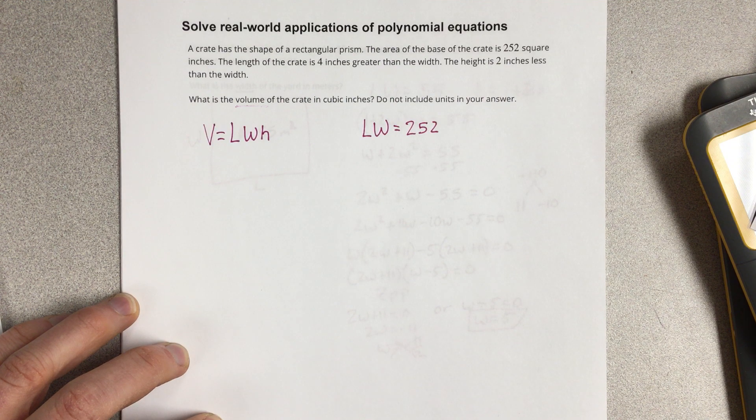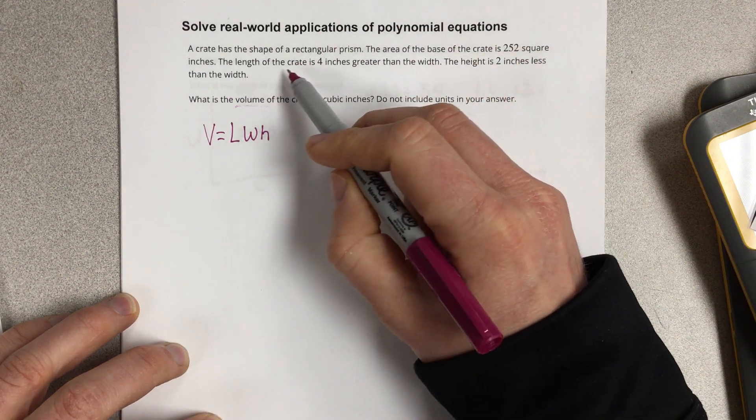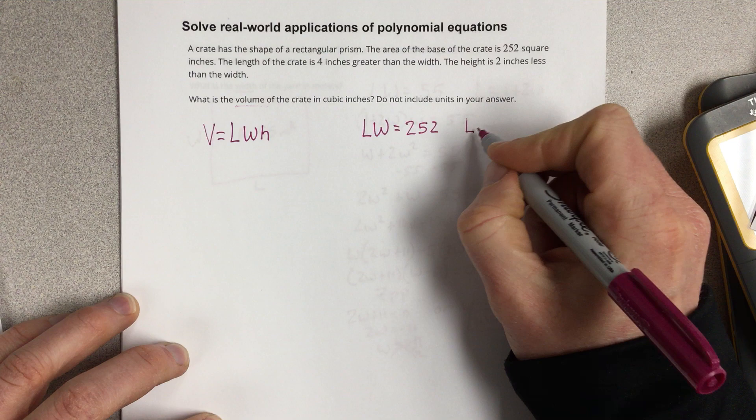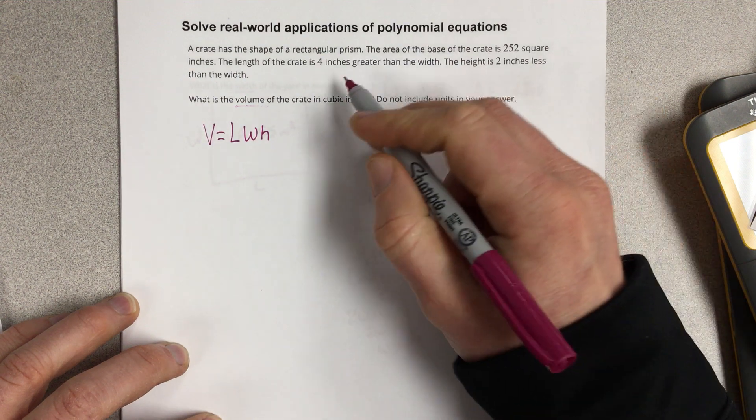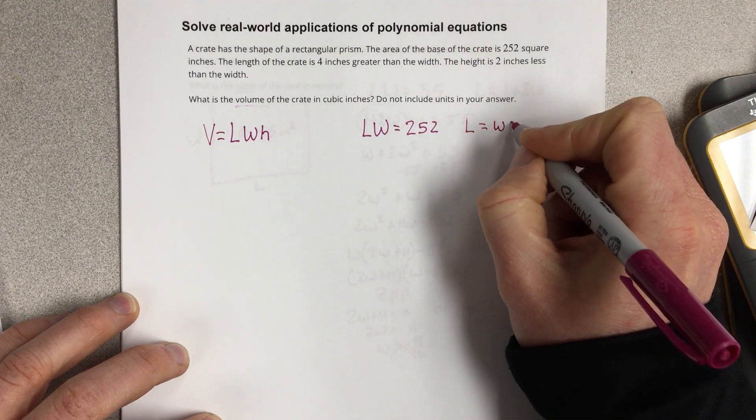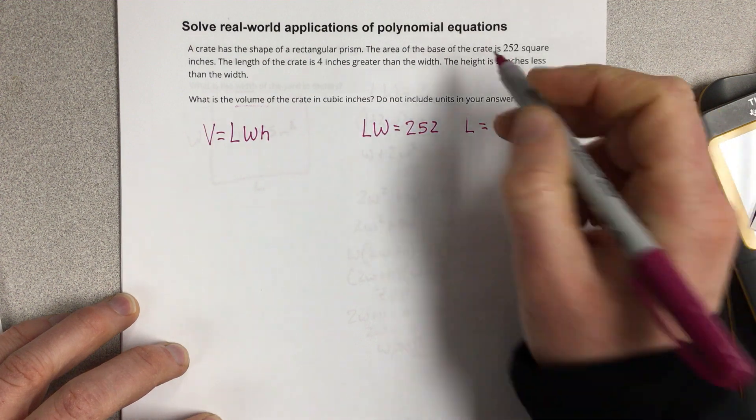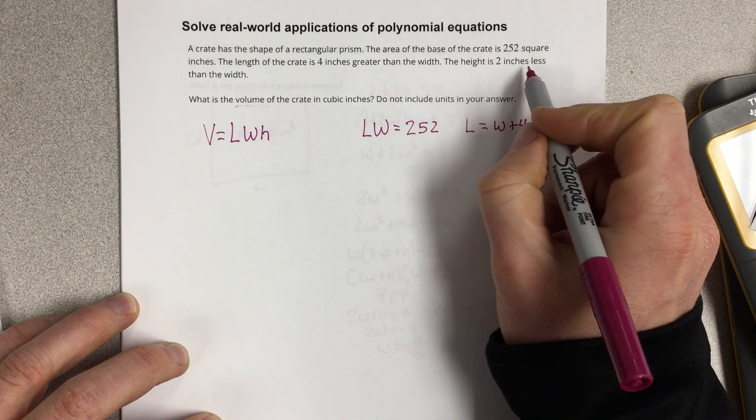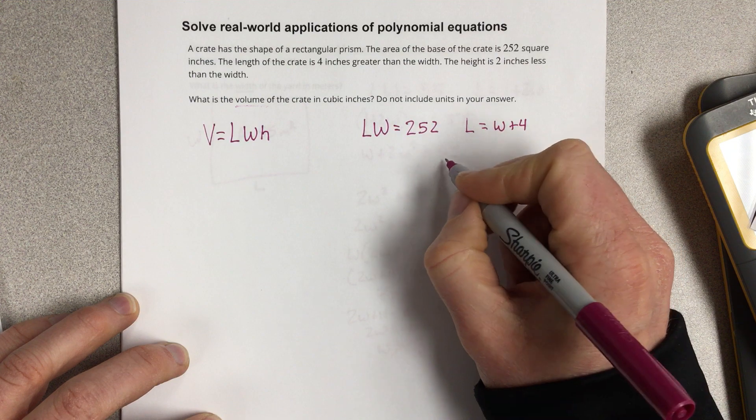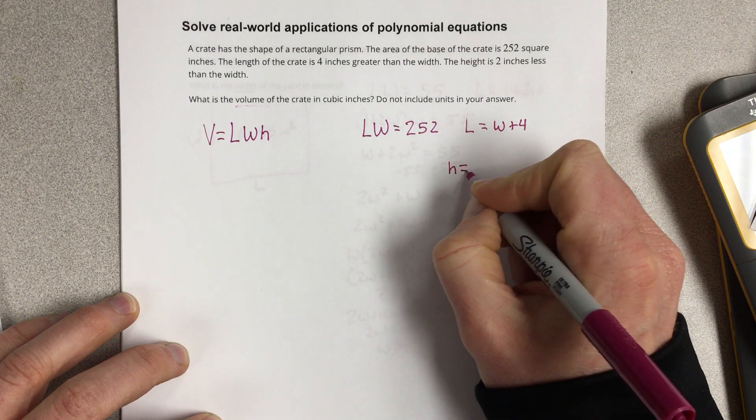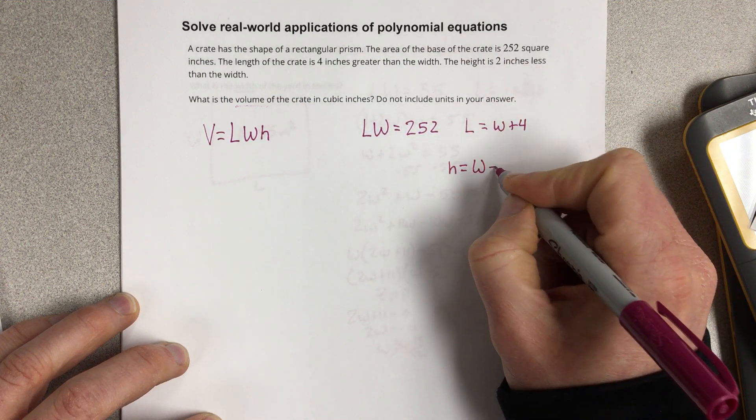And then they give us two more equations. They say the length of the crate, L, is equal to 4 inches greater than the width. So that's the width plus 4. And the height is 2 inches less than the width. So we can say that the height is equal to the width minus 2.